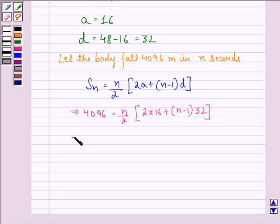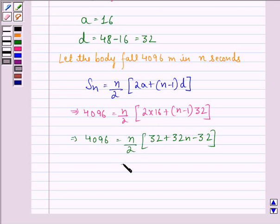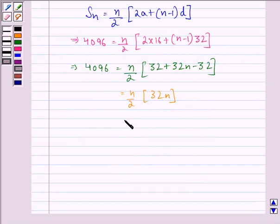So, this implies 4096 is equal to N by 2 into 32 plus 32N minus 32, which simplifies to N by 2 into 32N, which is equal to 16N square.